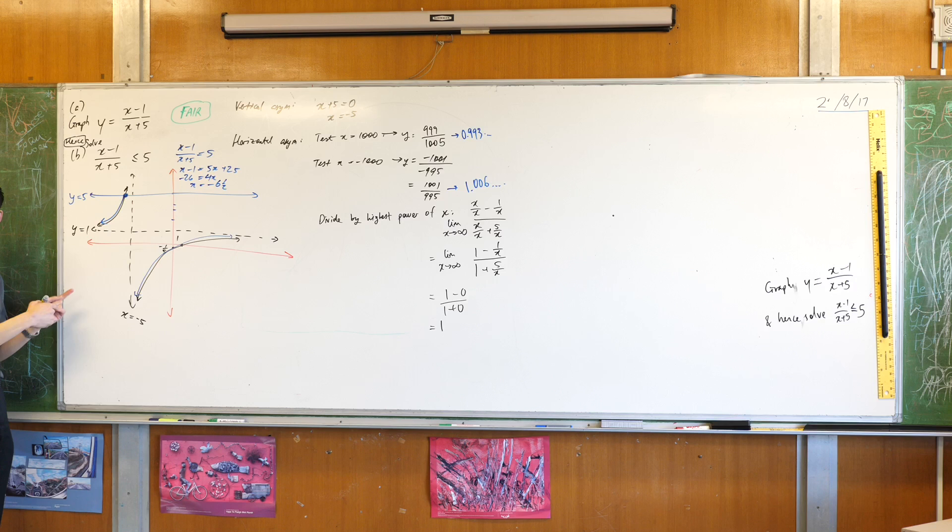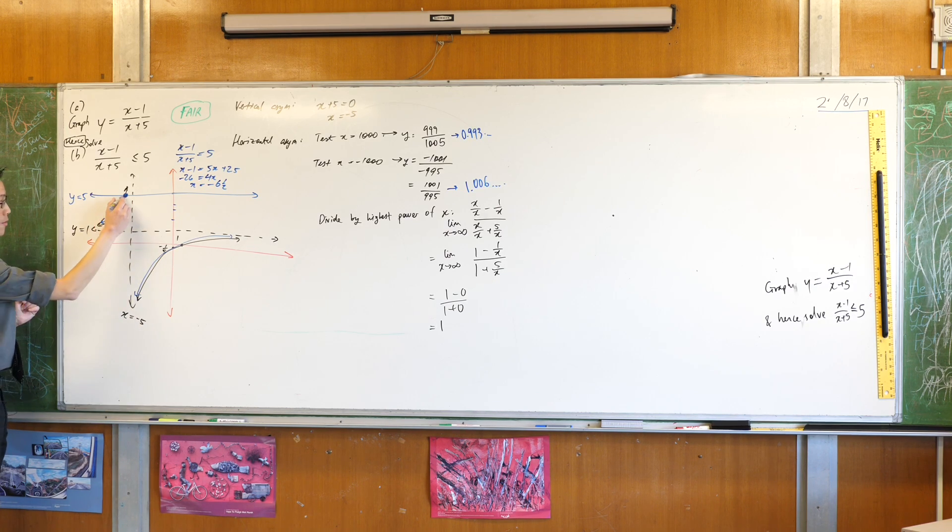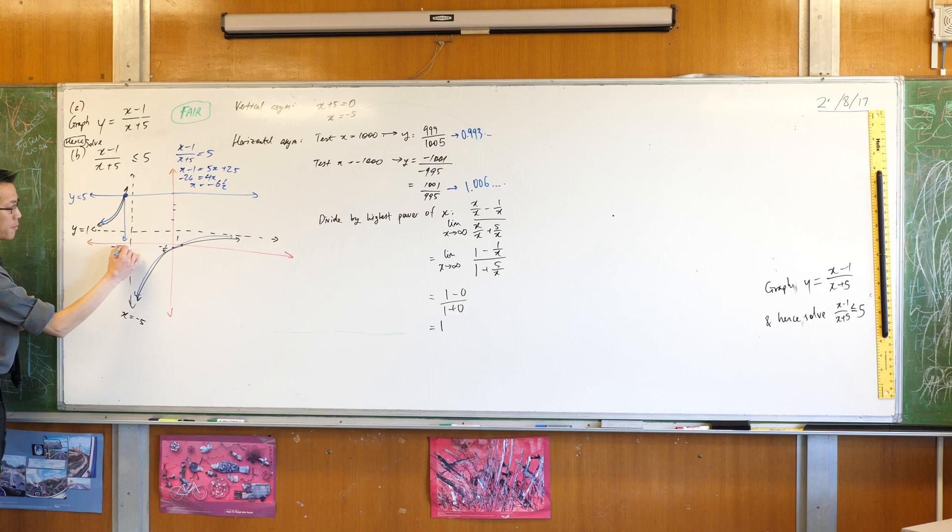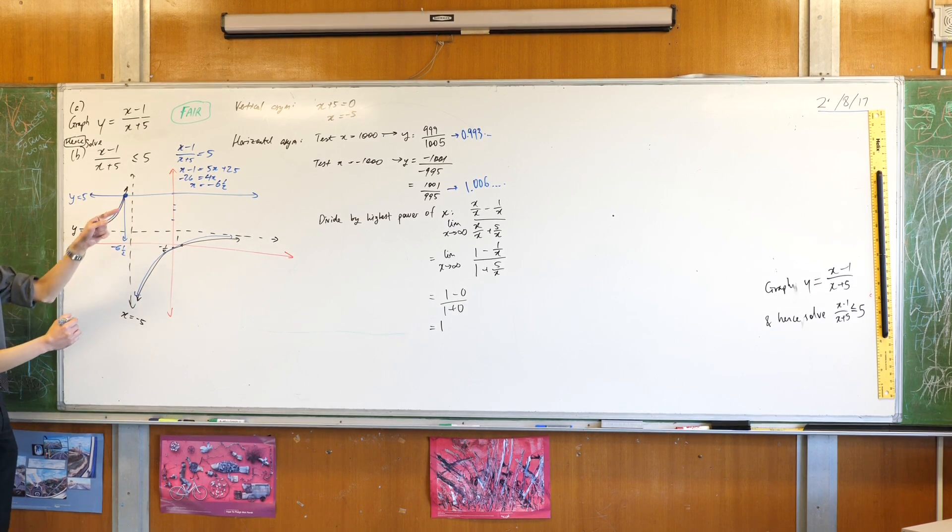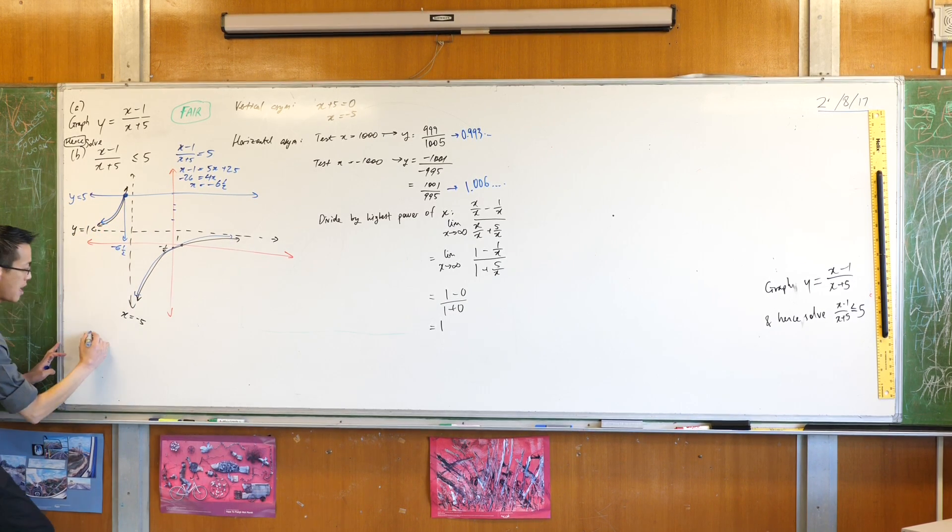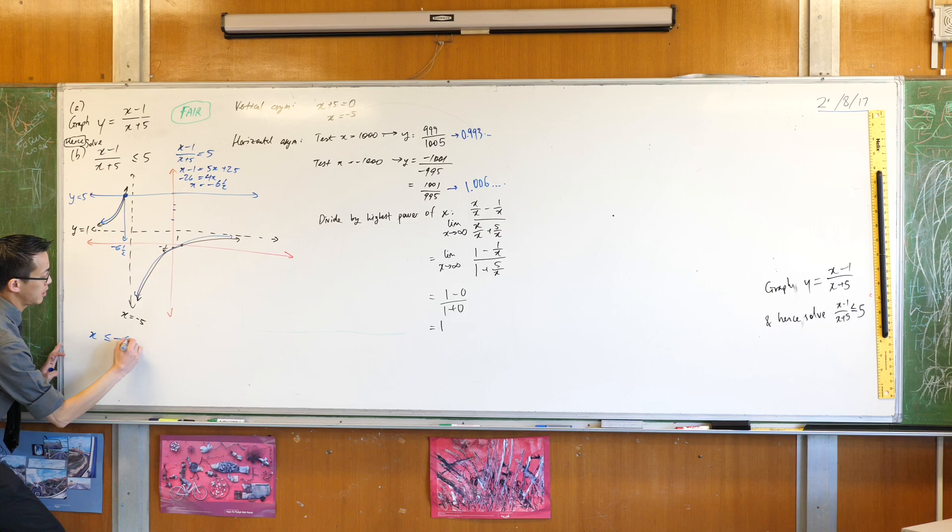Okay, does that fit with the information I already know? Look, it's just to the left of negative 5. Looks pretty bang on to me. Okay, so I can say from there, for the inequality, x is going to be less than or equal to negative 6 and a half. Now, what about the other side?